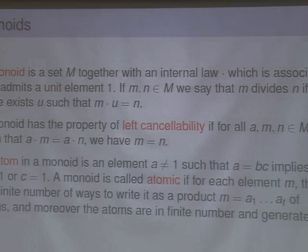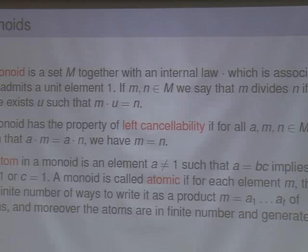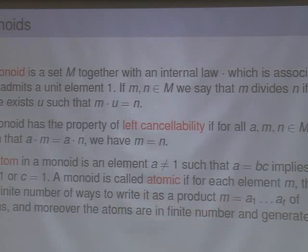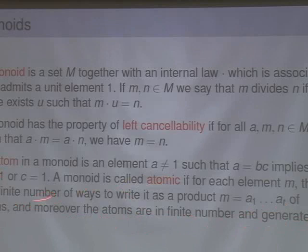What is called an atom in a monoid is sort of an irreducible element. It's an element different from the identity such that if you can write it as a product, then one of the two factors must be the identity. So it cannot be decomposed in a non-trivial product. A monoid is called atomic — this is a finiteness condition — if you take any element, there is a finite number of ways to write it as a product of atoms. We also assume that the atoms are in finite number and that they generate M.